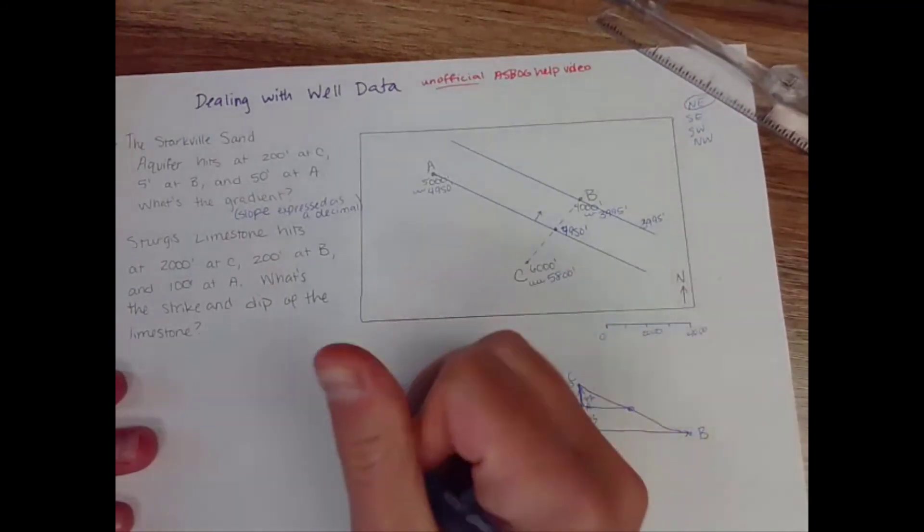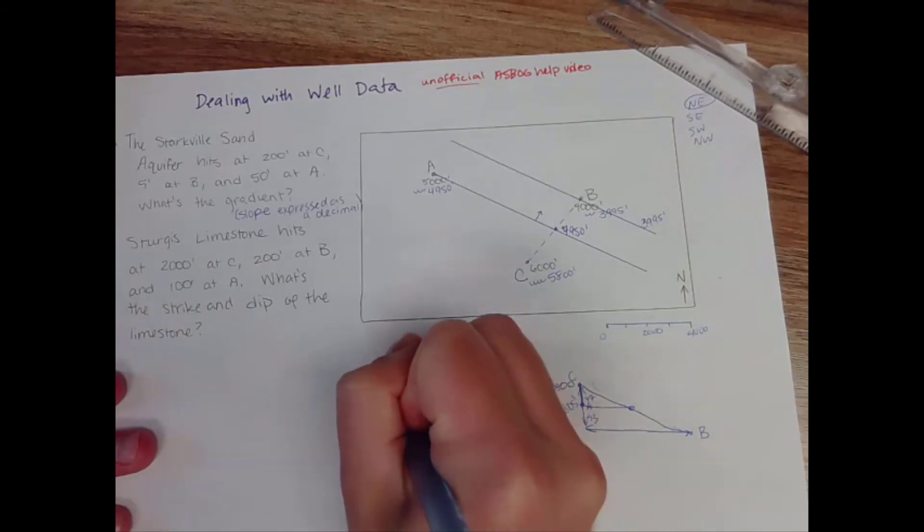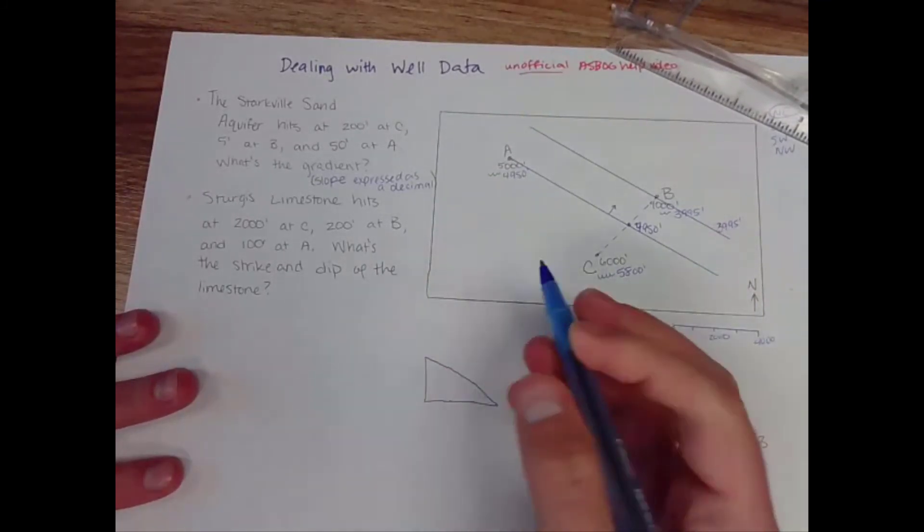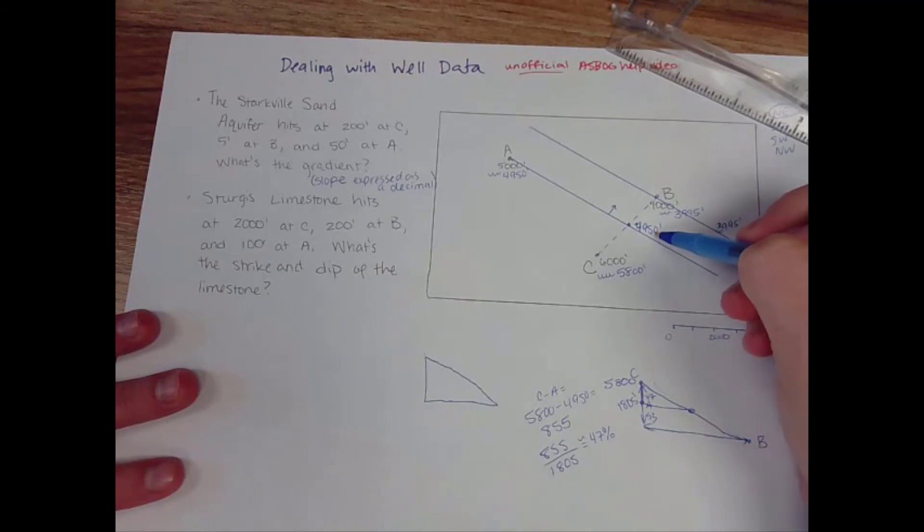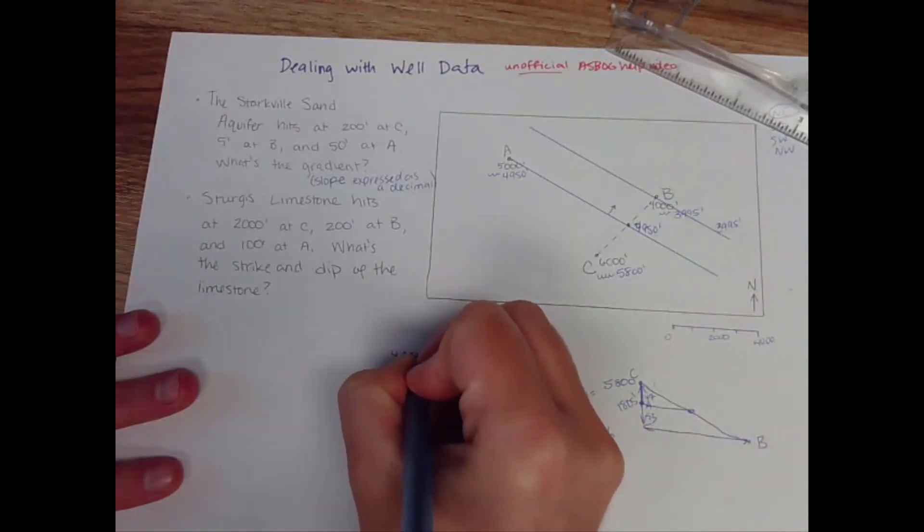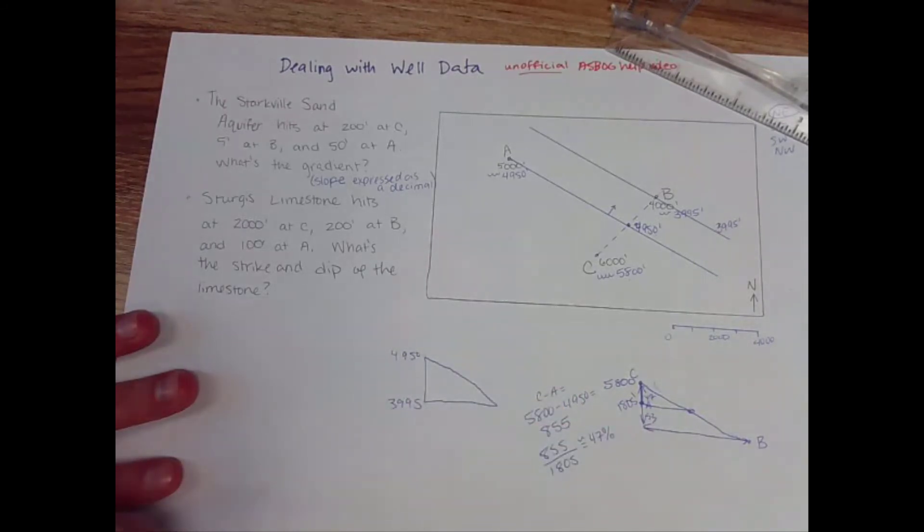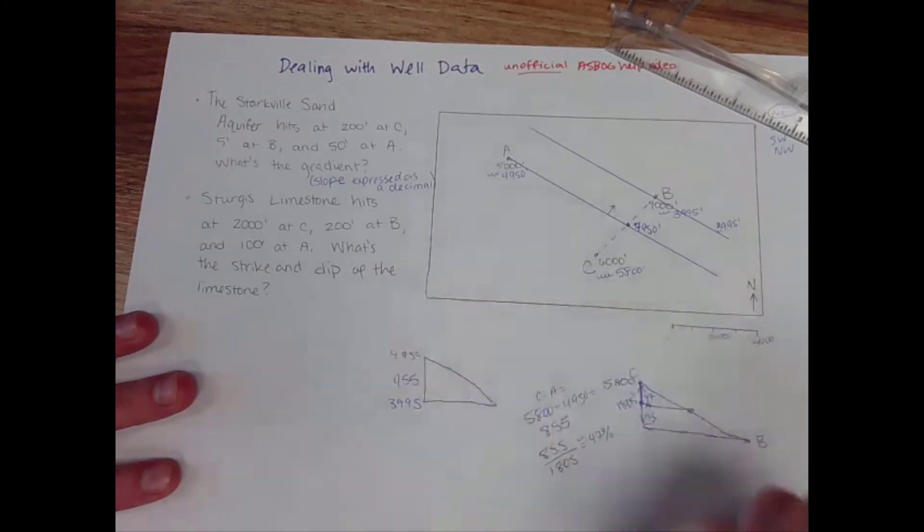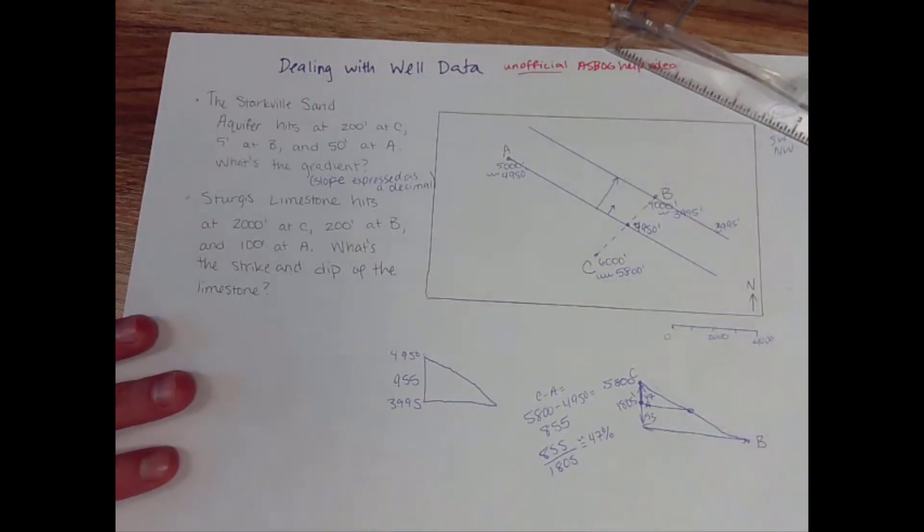So there is some triangle to be made in here to help us understand gradient where the vertical distance between the two is 4,950 minus 3,995. This happens to be 955 and a horizontal distance that water would also traverse through the aquifer in that direction. Now this is where you're going to use your map scale.